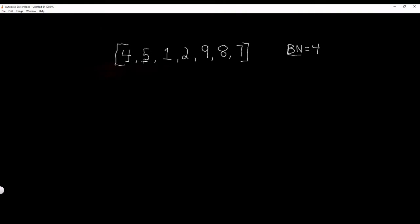Is 5 greater than 4? Yes, it is. So what we're going to do is we're going to update our biggest number to the current biggest number, which in this case is 5. So biggest number is equal to 5. Then we check: is 1 greater than our biggest number? No, it's not.